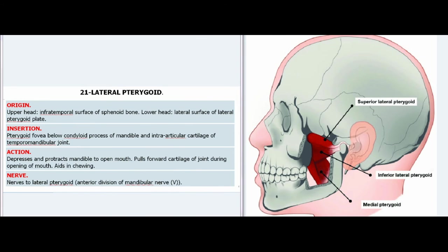21. Lateral Pterygoid. Origin — Upper head: infratemporal surface of sphenoid bone; Lower head: lateral surface of lateral pterygoid plate. Insertion: Pterygoid fovea below condyloid process of mandible and intra-articular cartilage of temporomandibular joint. Action: Depresses and protracts mandible to open mouth, pulls forward cartilage of joint during opening of mouth, aids in chewing. Nerve: Nerves to lateral pterygoid, anterior division of mandibular nerve (V).